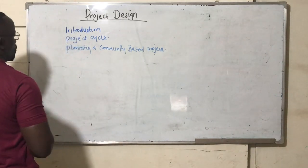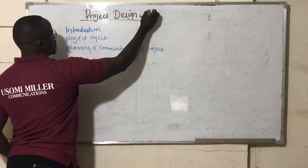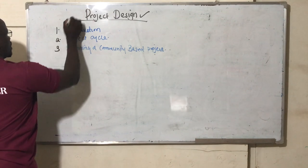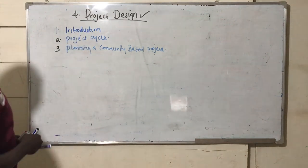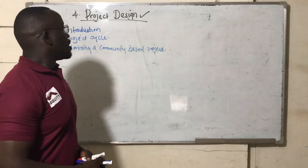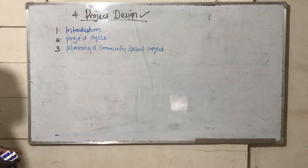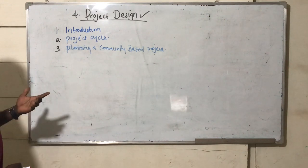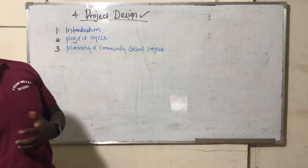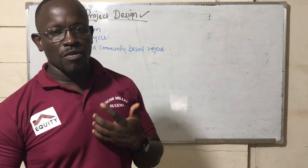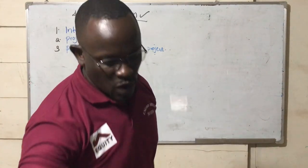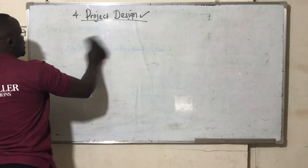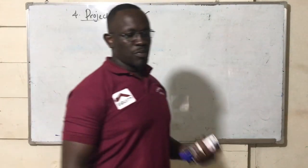The next chapter we are supposed to look at is project design. We have looked at chapters one, two, and three — now this is four. We are moving in a sequence: first we knew the introduction, then we understood that a project has a life cycle, then we talked about planning a community-based project. Now that you have planned and known the forms of planning, what next do we need? We need what we call a project design — how do you design a project now that you have planned for it?